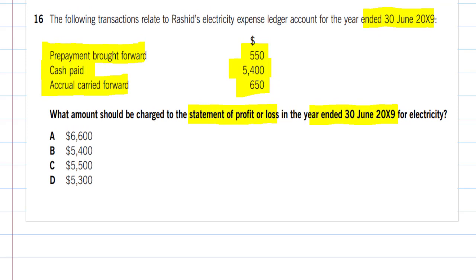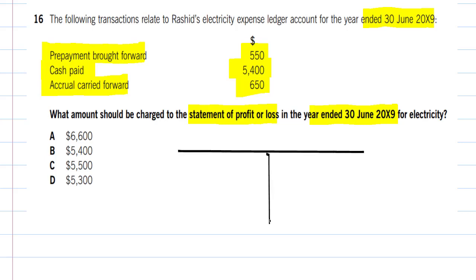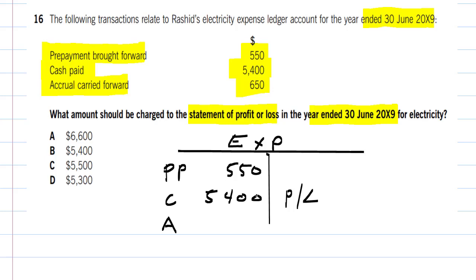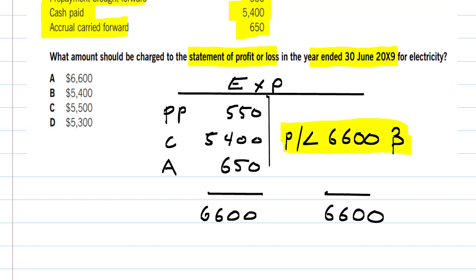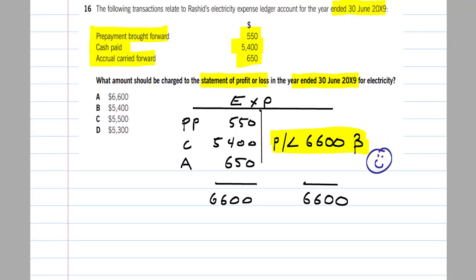We sketch out the template on scrap paper. The expense account has the prepay in the upper debit side, below that is cash, and below that is the closing accrual. Across from cash is the P&L. We plug in the figures: $550 prepay, $5,400 cash, and $650 closing accrual. We total the bigger side — the debit side — which comes to $6,600. As there is nothing else on the credit side, the charge to the P&L will be $6,600. We found the right answer using a template and the knowledge we just learned.